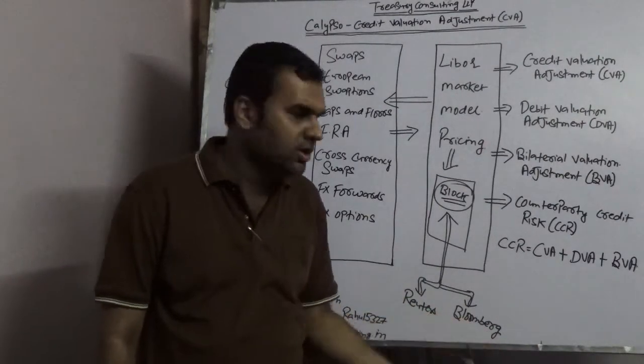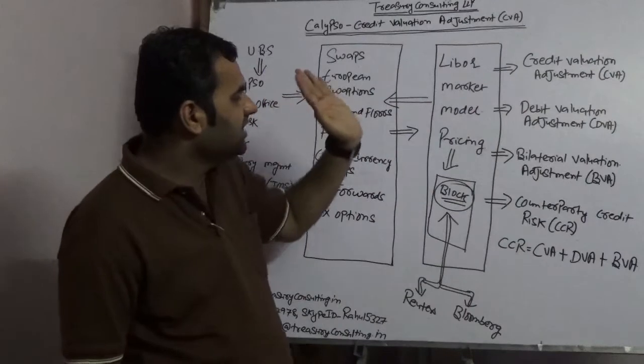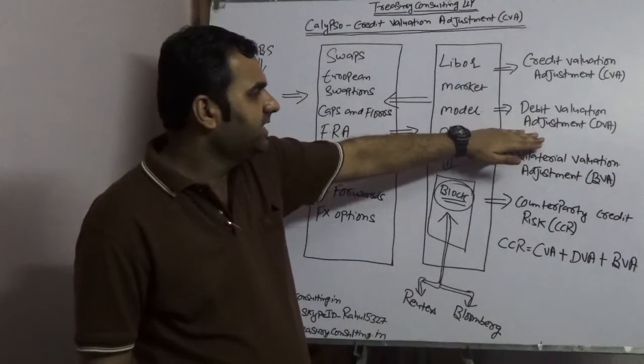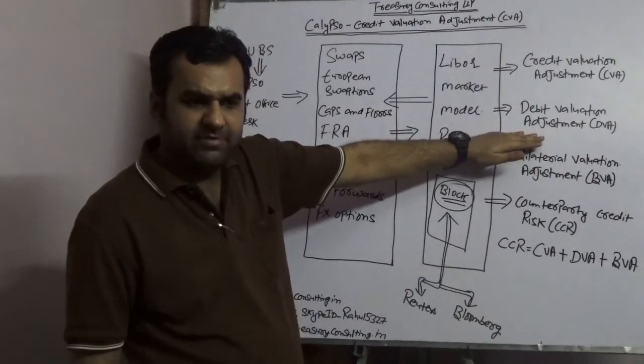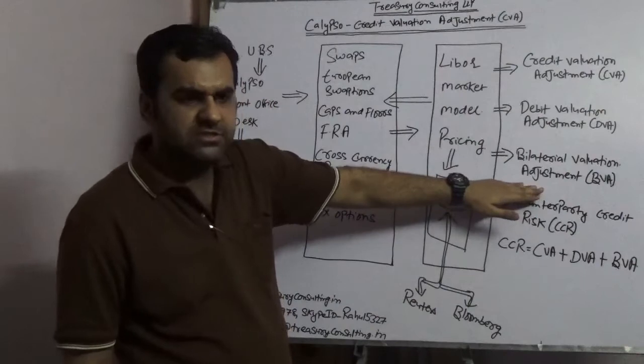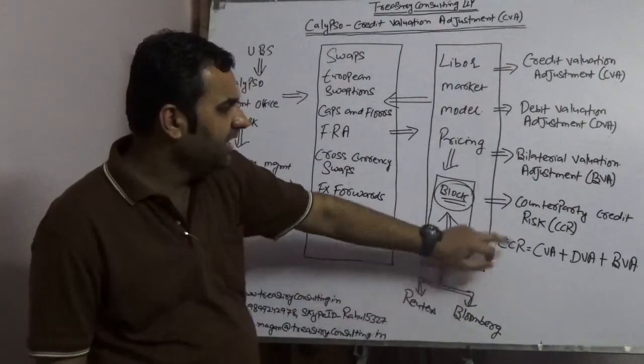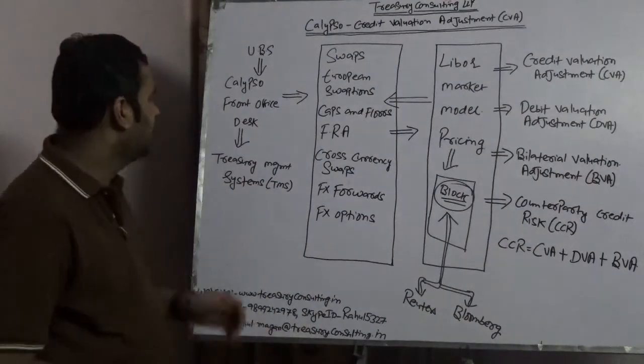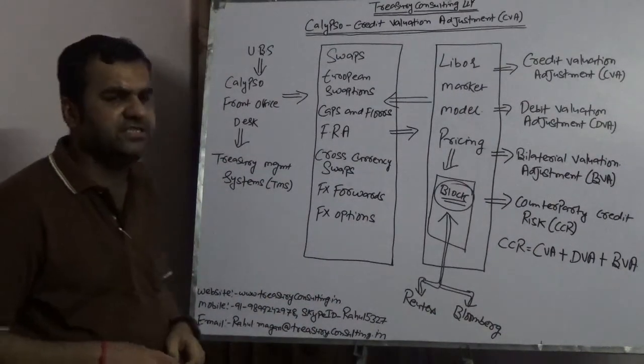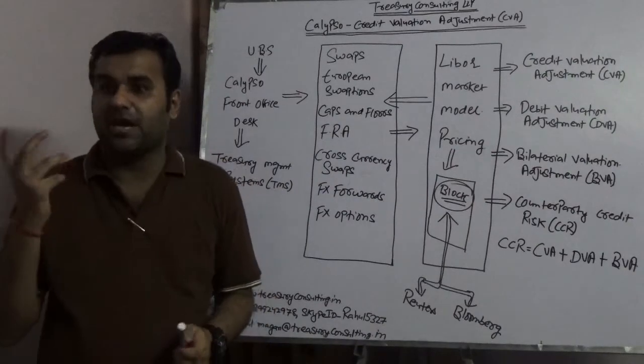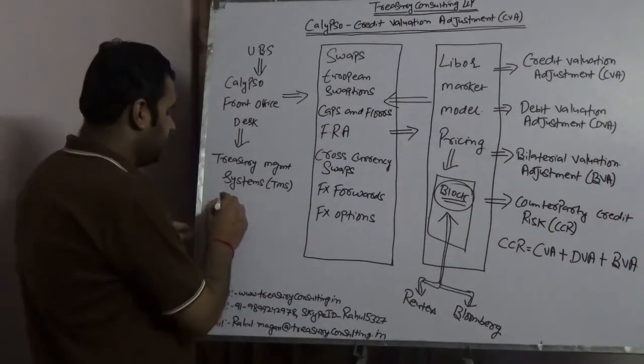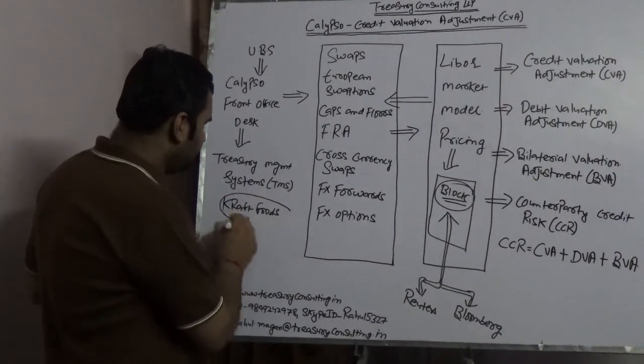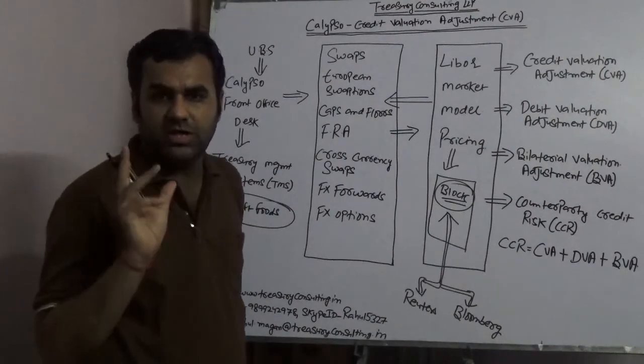Using these long-term instruments and the LMM model where you have a block and the feed is coming from either Reuters or Bloomberg, the pricer calculates CVA (credit valuation adjustment), DVA (debit valuation adjustment), BVA (bilateral valuation adjustment), and CCR (counterparty credit risk).